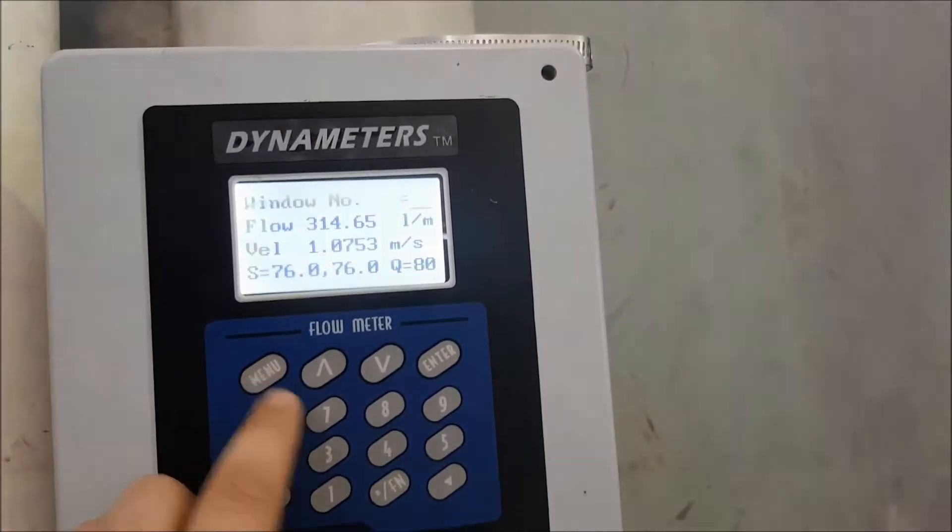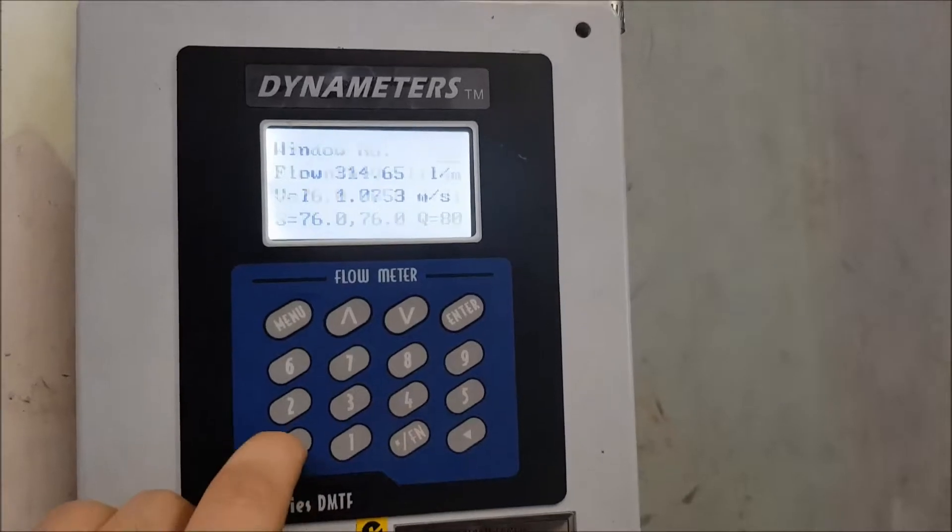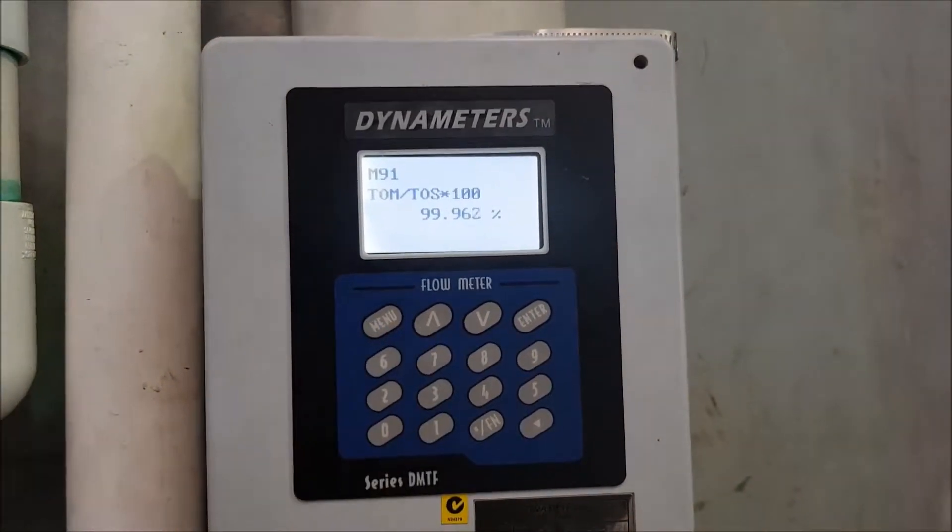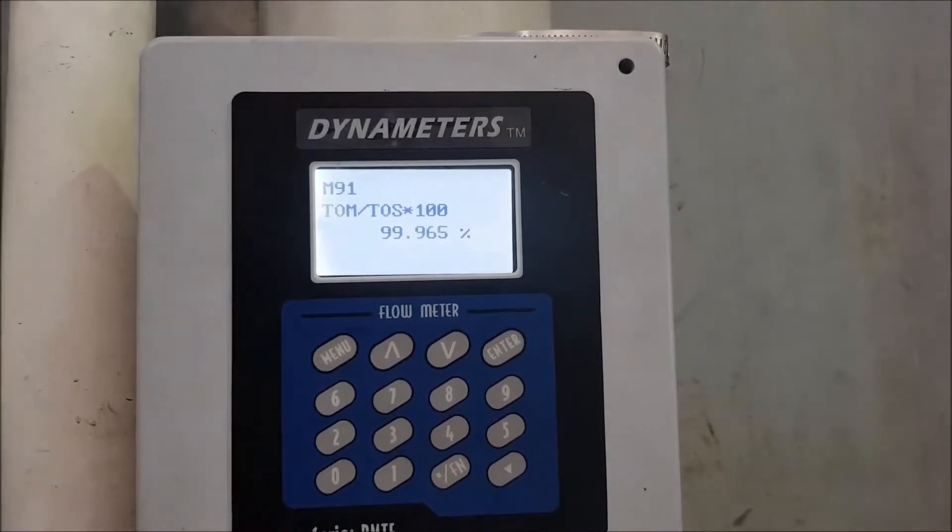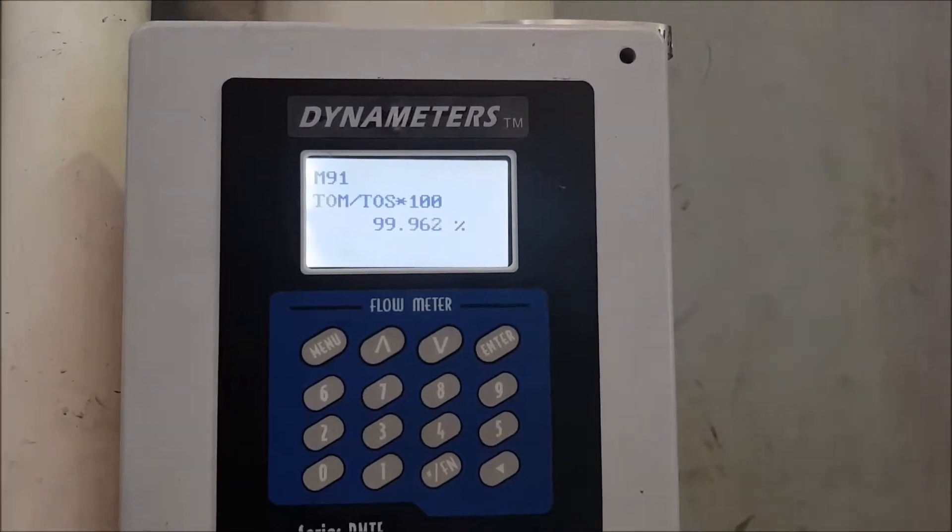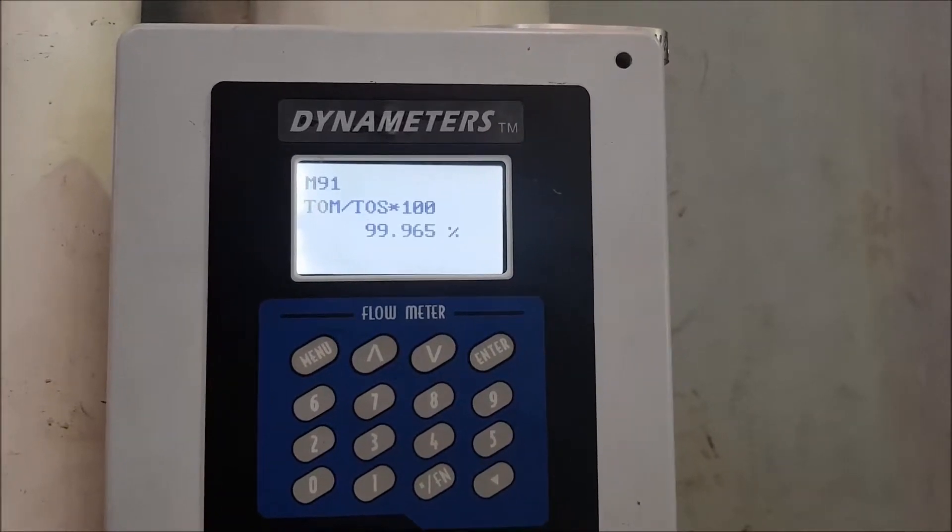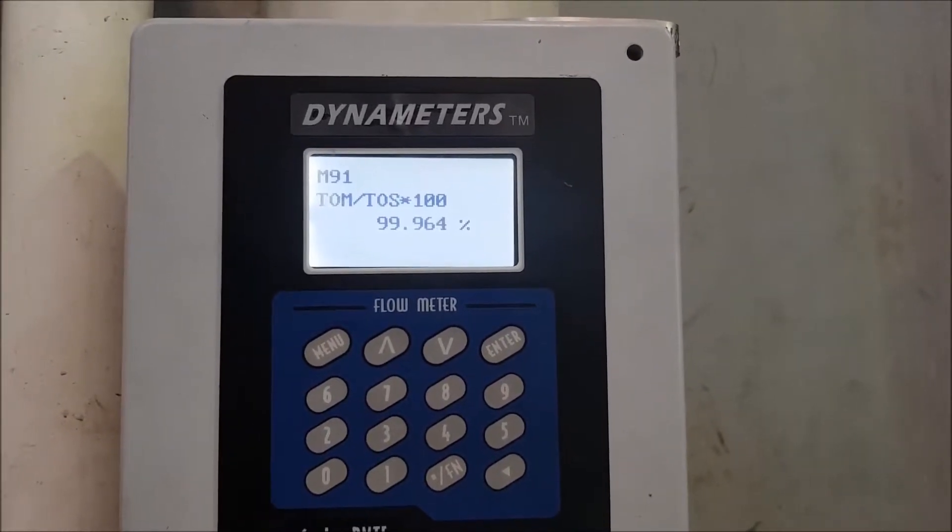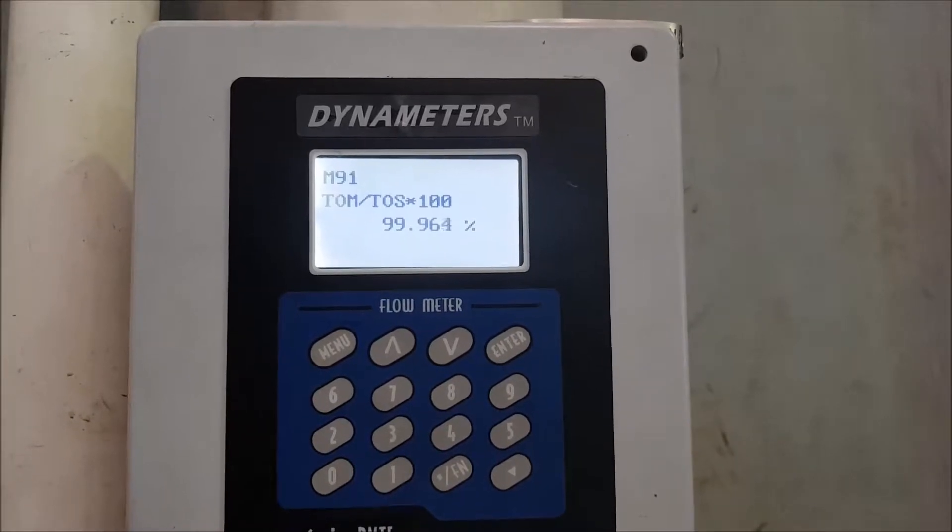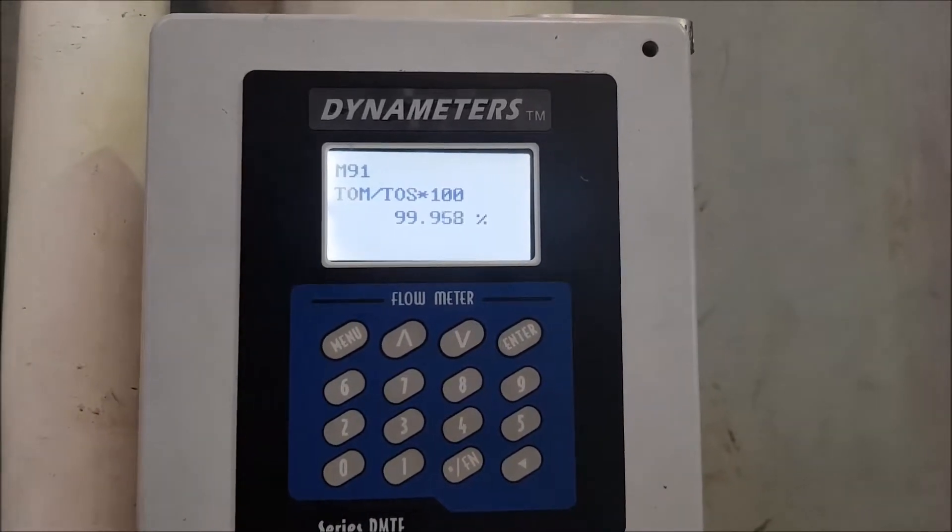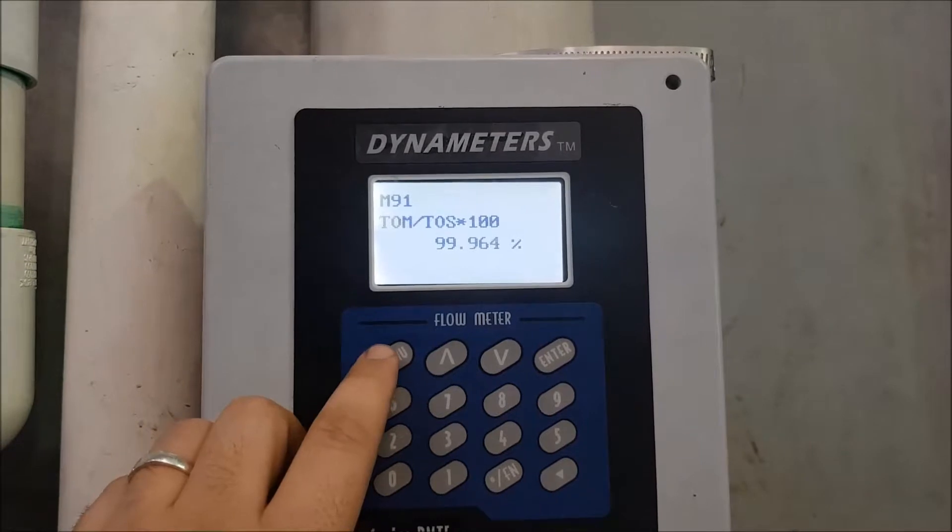The other value we want to check is over on menu 90. Sorry. I mean 91. And that's this percentage value. So you want this in the range of 97 to 103 percent. Now I'm sitting right there at near 100 percent. So that is good. That's what we want to see.